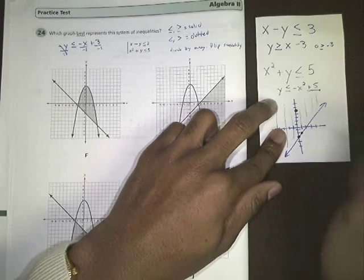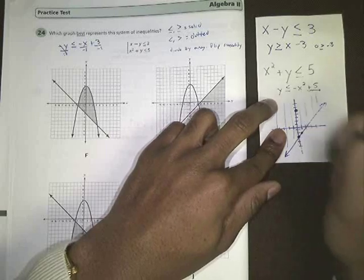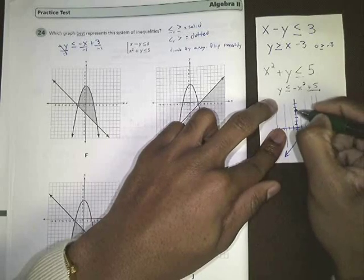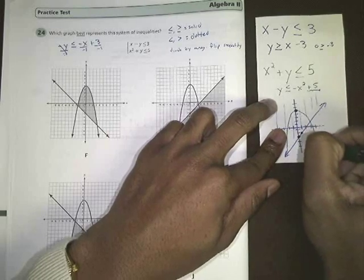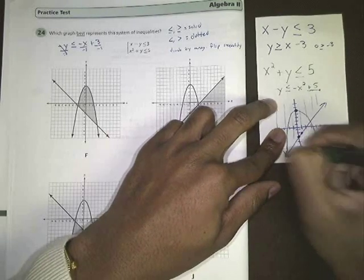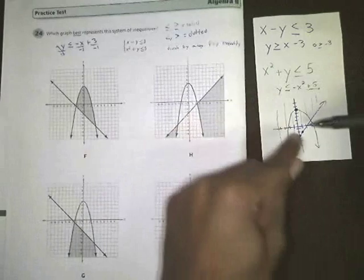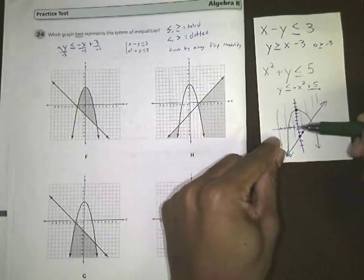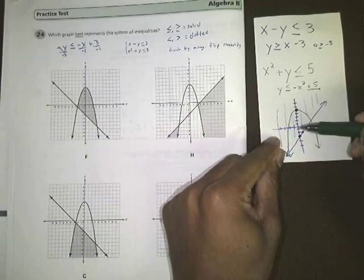And then you know it's going to look like an n. And then you just kind of need to figure out which part you need to shade to. When you're dealing with parabolas, you can pick the ordered pair 0, 0 as well and kind of plug it in.